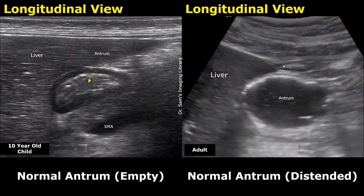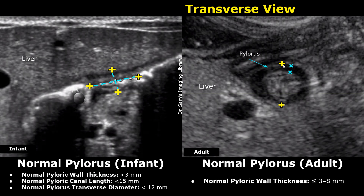The antrum and the pylorus of the stomach are usually scanned on ultrasound when there is an indication. This image shows the normal pylorus in an infant, and this image shows a normal pylorus in an adult patient in the transverse plane. The normal pyloric wall thickness in adults is between 3 and 8 millimeters.